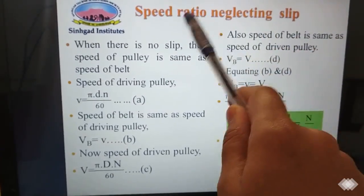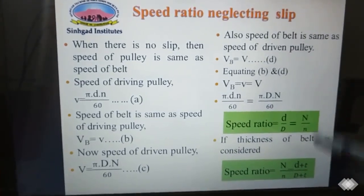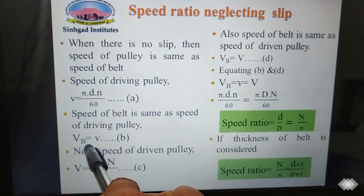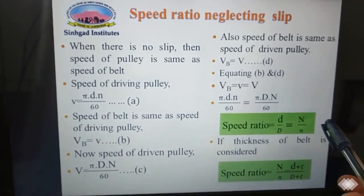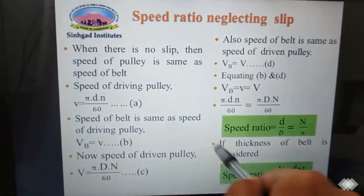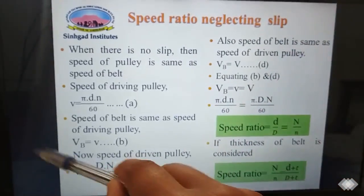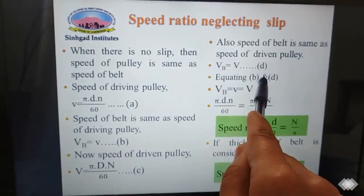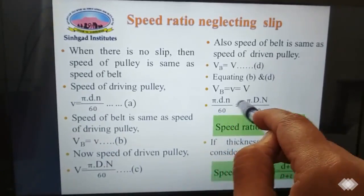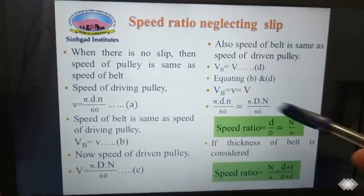To calculate the speed ratio neglecting slip: if there is no slip, then the speed of the driver pulley and speed of the belt are the same. So speed of the driver pulley, small v, equals pi·d·n divided by 60, which equals the speed of belt. Similarly, the speed of the driven pulley capital V equals pi·D·N divided by 60, equal to the belt speed. So vb equals v equals V, meaning pi·d·n/60 equals pi·D·N/60, and pi and 60 cancel.